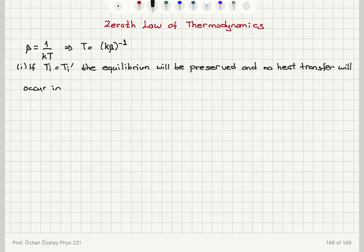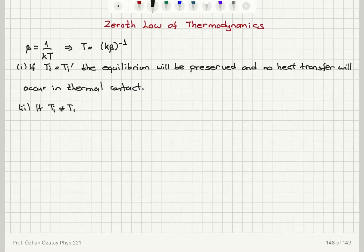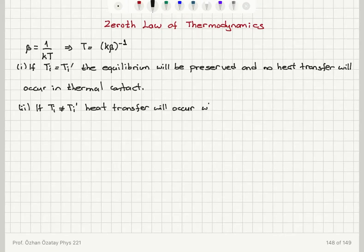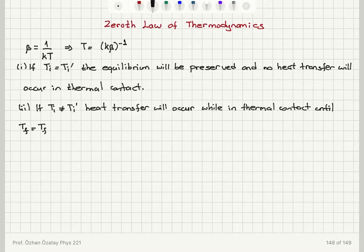When we form a thermal contact between two systems A and A prime, if their initial absolute temperatures are not the same, heat transfer will occur. This continues until we reach the thermal equilibrium condition where the final absolute temperatures of the unprimed and primed systems are the same.